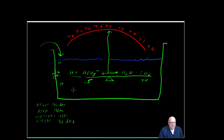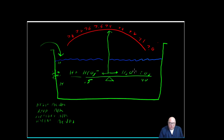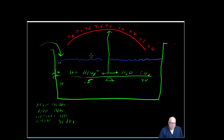You can have two problems at the same time. The only combination you can't have is a respiratory alkalosis and respiratory acidosis simultaneously — you can't have CO2 be too high and too low at the same time. But you could have a respiratory acidosis where CO2 is too high, and also a metabolic acidosis where you've lost bicarbonate. That's a double whammy — both problems cause the seesaw to tilt right.